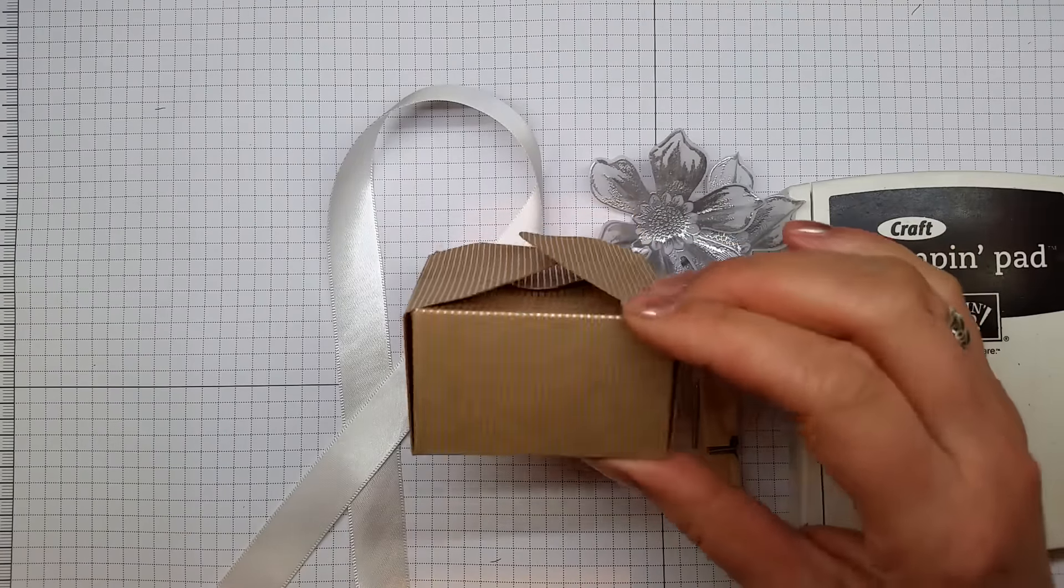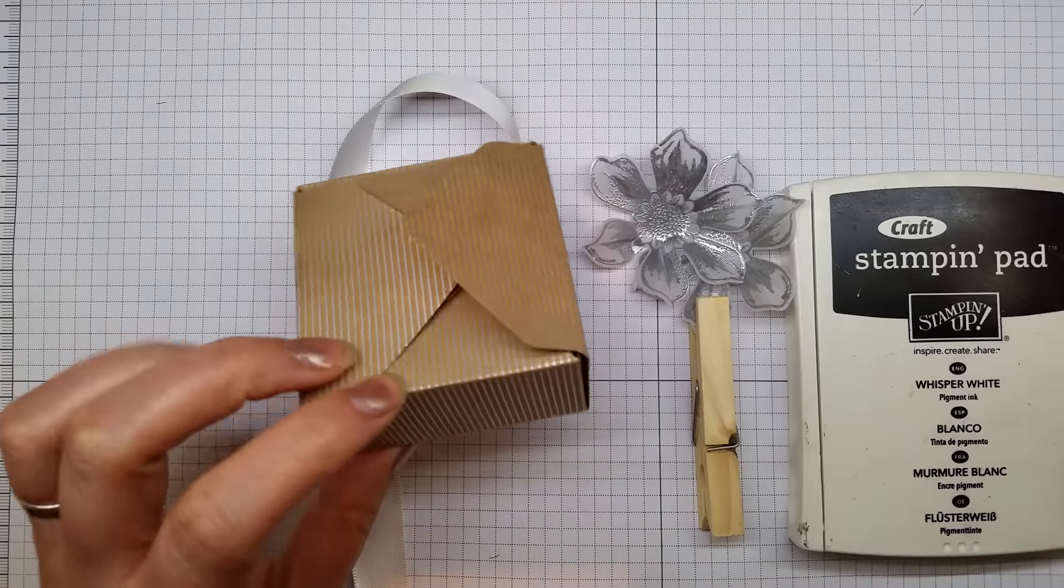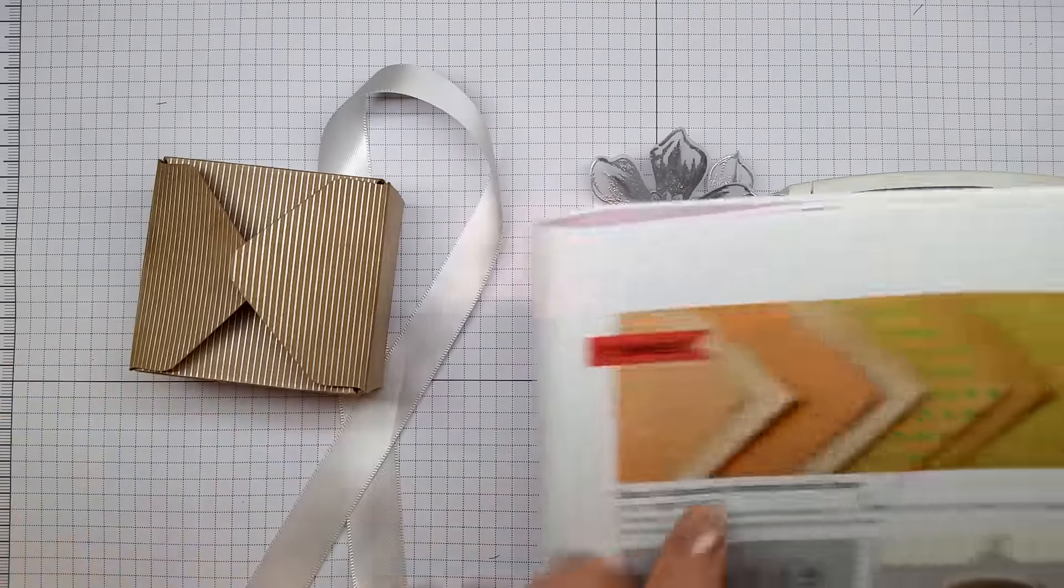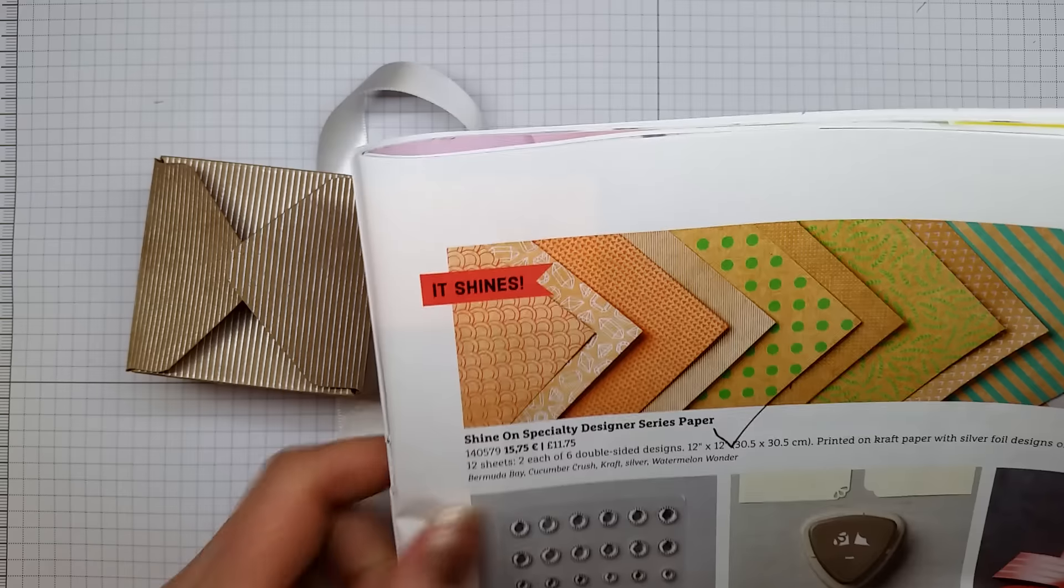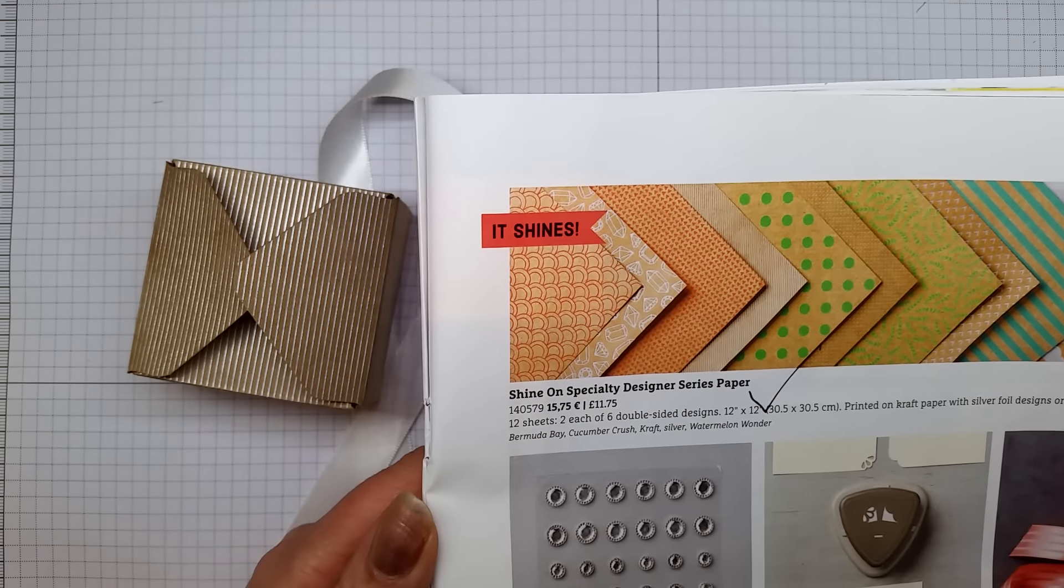I've created this box already using a six by six sheet of cardstock, and I've cut that from the shine on specialty designer series paper that's in the spring summer catalog.